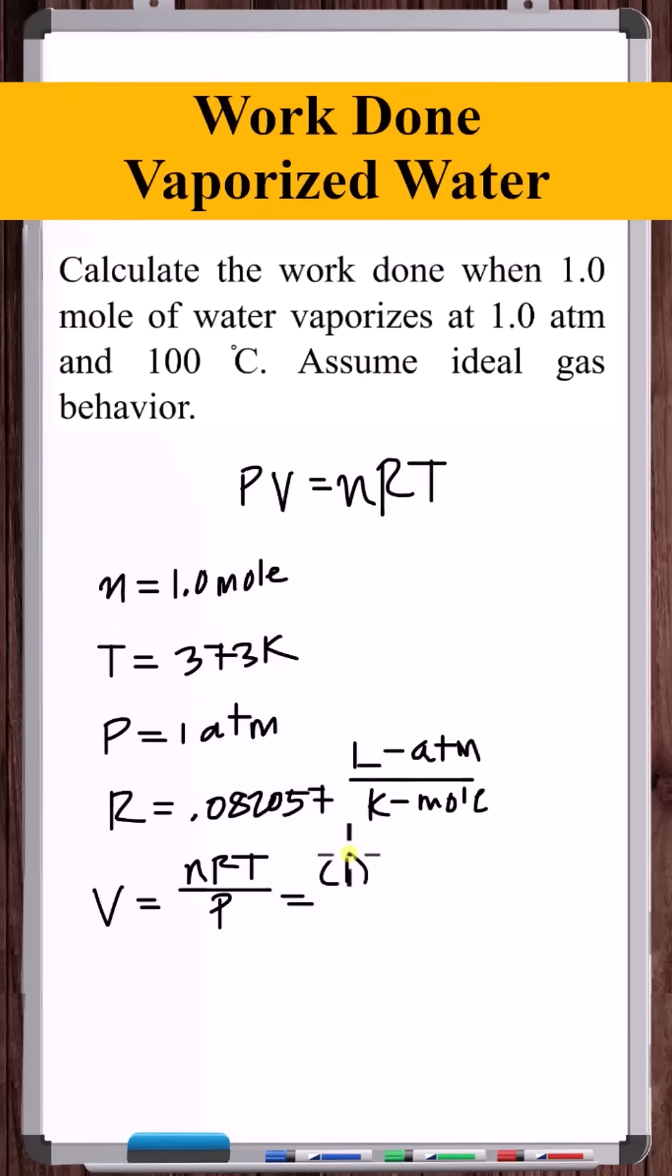Solving for V, we go from no gas to a volume of gas that's equal to 30.6 liters.